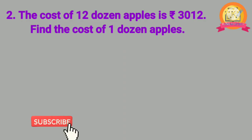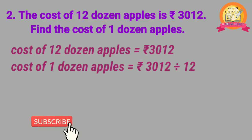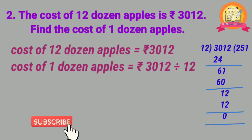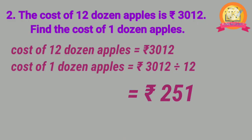Second problem: The cost of 12 dozen apples is 3,012 rupees. Find the cost of 1 dozen apples. Solution: cost of 12 dozen apples is Rs. 3,012. To get the cost of 1 dozen apples, divide 3,012 by 12. After dividing, we get 251. Therefore, cost of 1 dozen apples is equal to 251 rupees.